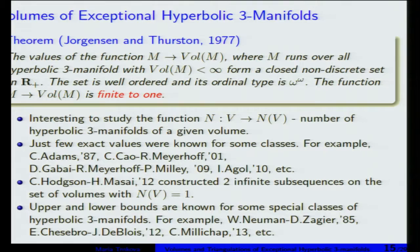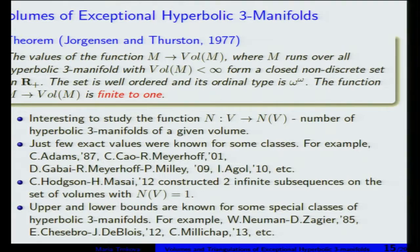Not so many examples of this finite-to-one property are known. Adams showed in the non-orientable case that a one-cusp manifold is unique; Saad Meyerhoff showed it for one-cusp orientable manifolds. Gabai, Meyerhoff, and Milley showed that the Weeks manifold is the unique smallest-volume closed manifold, and also showed the 10 smallest one-cusp manifolds. Agol showed exactly two manifolds share the second-smallest two-cusp volume. Hodgson and Masai constructed infinite sequences with exactly one manifold per volume. Upper and lower bounds were also studied by Neumann-Zagier, Champanerkar-Kofman-Lakeland, and Millichap.